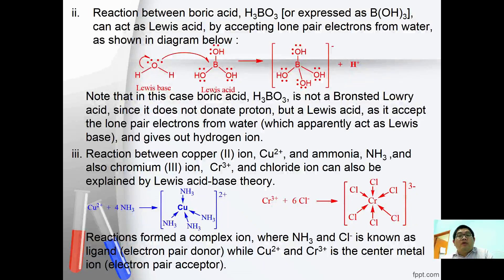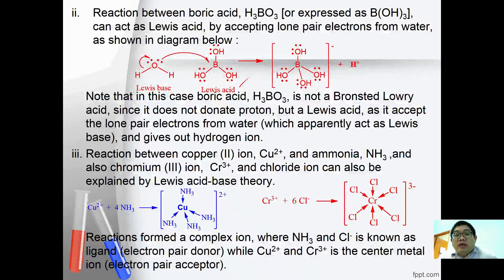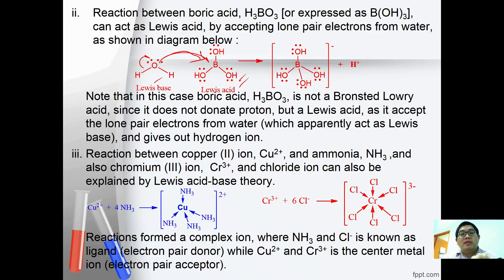In the reaction between boric acid and water, water acts as a Lewis base by donating an electron pair to the boric acid, which acts as a Lewis acid. When the electron pair is donated, boric acid becomes B(OH)4- leaving H+ behind. Therefore, water acts as a base. Note that boric acid does not act as an acid by donating a proton; instead, it is accepting an electron pair that makes it an acid.